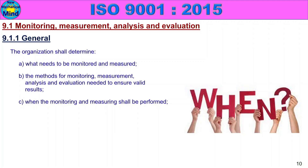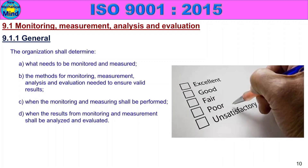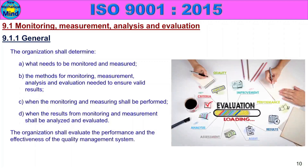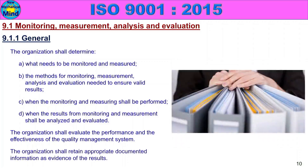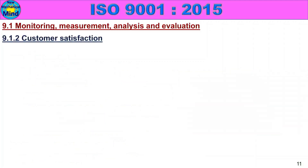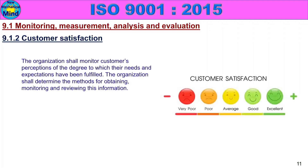When monitoring and measuring shall be performed — the monitoring and measuring activity, how to do it. When the results from monitoring and measurement shall be analyzed and evaluated — how to analyze and evaluate. The organization shall evaluate the performance and effectiveness of the quality management system periodically. The organization shall retain appropriate documented information as evidence of the results.